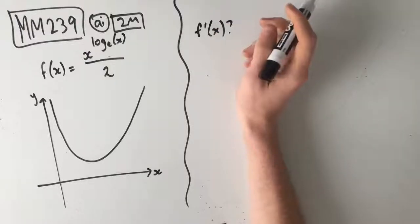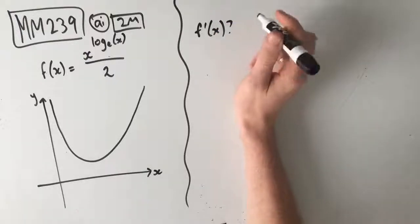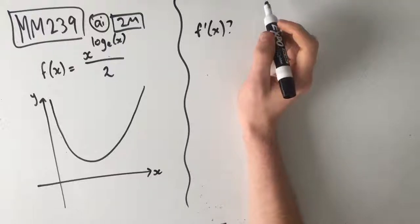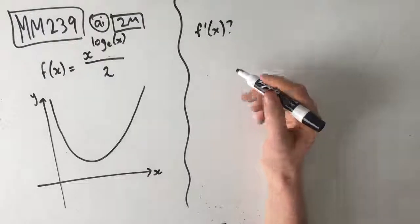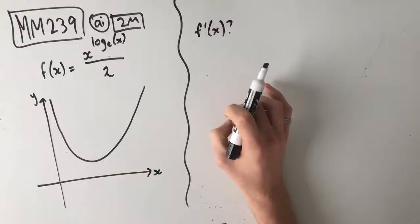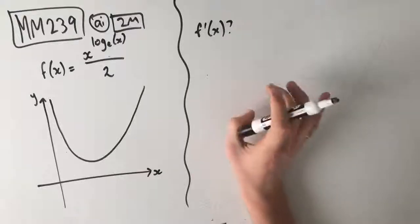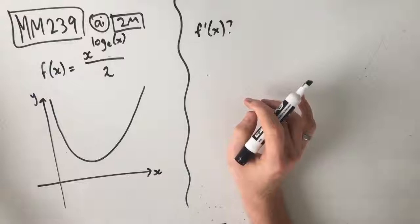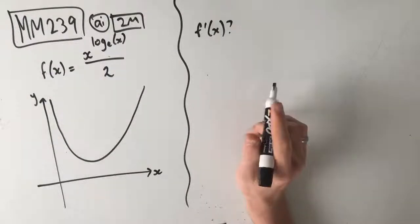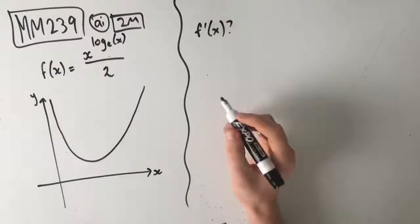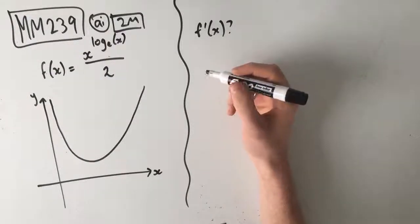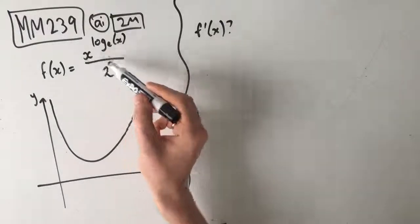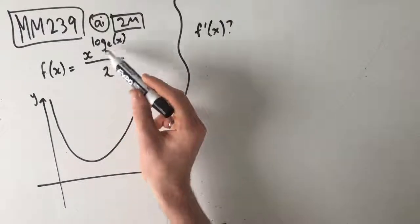We do have our calculator in this question, so we can actually just use our calculator to find this. But because this is a two-mark question, if you just put it in your calculator and write the answer, you're only going to get the one mark. So let's go through how to actually work this out, because you might not have even seen a question like this before. It is actually quite difficult.